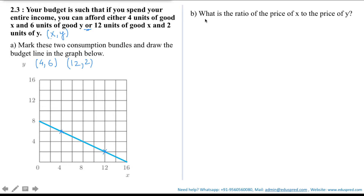Now let's move on to the second part: what is the ratio of the price of x to the price of y? To understand this, suppose the consumer increases her consumption of good x by delta x units. How much will her consumption of good y have to change in order to satisfy her budget constraint? We use delta y to indicate her change in consumption of good y.